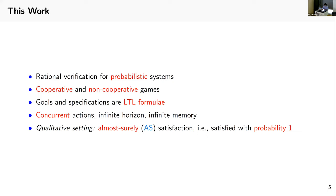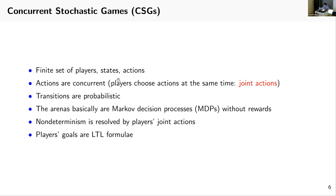The games in this work have finite sets of players, states, and actions. Actions are concurrent, so players choose actions at the same time. Transitions can be probabilistic. The arenas of the games are basically Markov decision processes but without rewards. The non-determinism in the arenas is resolved by players' joint actions, and players' goals are given by LTL formulae.